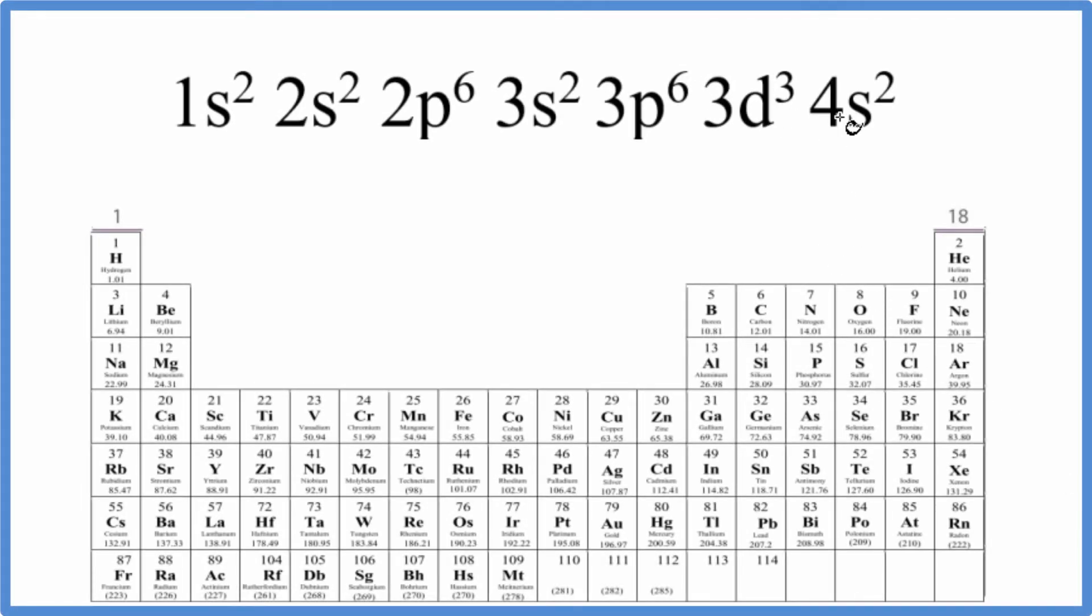There are two ways we can figure out which element is represented by this electron configuration here that ends in 3D3 4S2. The first way is just to count up all of the electrons.